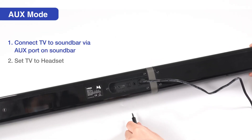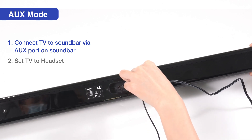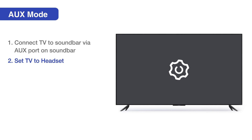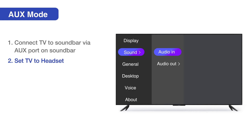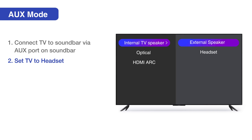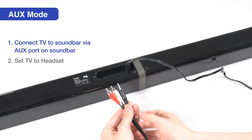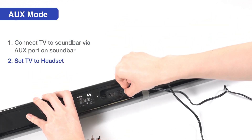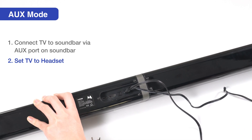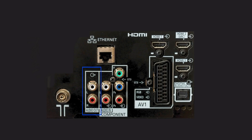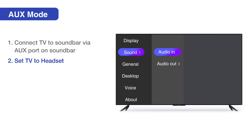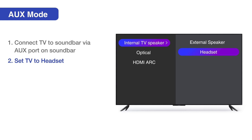AUX mode. Insert one end of the 3.5 mm auxiliary cable into the back of the soundbar and insert the other end into your TV's 3.5 mm headphone port. Next, go into your TV's sound settings and set headset as your TV's speaker. When connecting with the 3.5 mm auxiliary to RCA cable, insert the 3.5 mm audio end into the back of the soundbar, then insert the other end into your TV's RCA audio out port. Next, go into your TV's sound settings and set headset as your TV's speaker.